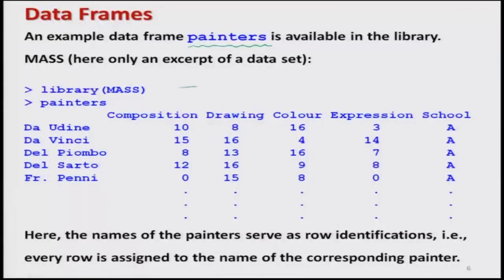In order to use this data set, we first have to load the library. Whenever you want to use something not included in the base package of R, it has to be loaded specifically. We load the library MASS by writing library() with MASS inside the argument. Let us try to see what is happening in the data set painters — I simply write 'painters' and press Enter.